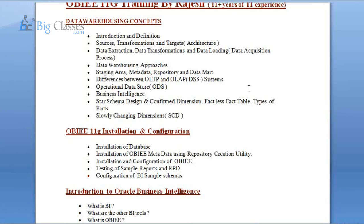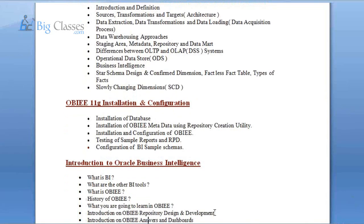We'll start with the installation of the database, and once the database is installed, we'll do the metadata creation using the RCU. Then we install and configure OBIEE, test the sample reports which are part of OBIEE, and configure the BI sample schemas — how you deploy the BI sample schemas on the OBIEE server. By the end of this session, you'll know how to install OBIEE 11G on your workstation and configure and deploy the BI sample schema on a WebLogic server.